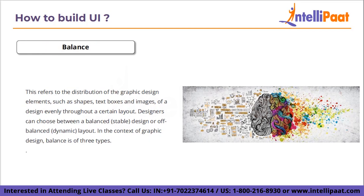The very first principle is balance. Balance is the distribution of graphic design elements — such as shapes, text boxes, and images — evenly throughout a layout. Designers can choose between a balanced design or an off-balance dynamic layout. In the context of graphic design, balance is of three types.